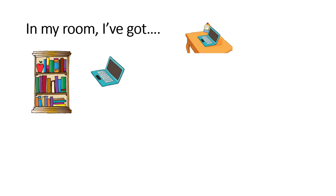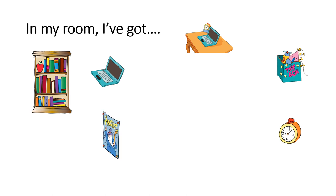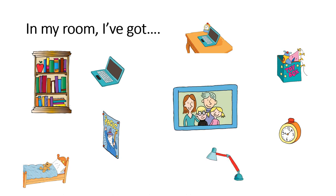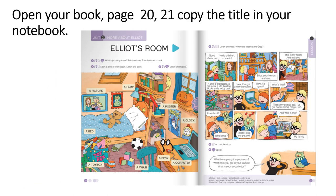In my room I've got... Reci naglas što od ovih stvari imaš u svojoj sobi. In my room I've got: a bookcase, a computer, a desk, a clock, a toy box, a poster, a bed, a lamp, a picture. Now, open your book page 20-21. Copy the title in your notebook. Prepiši naslov u svoju bilježnicu, stop the video.